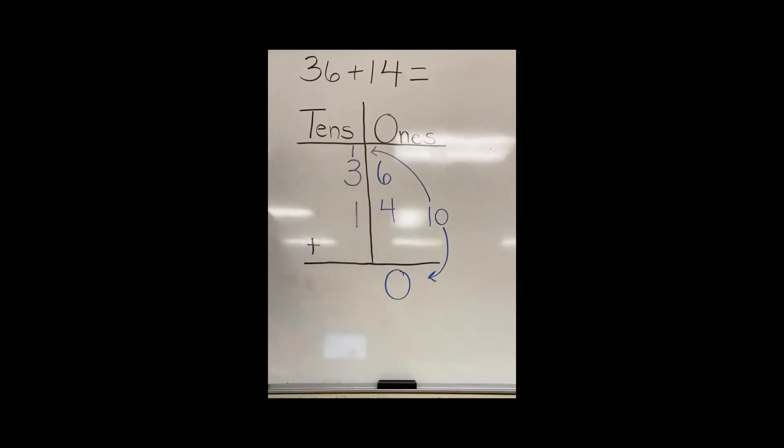Now I need to add all of my tens together, one ten plus three tens equals four tens and one more ten is five tens. So all together we have five tens and no ones left over. My answer is now 50.